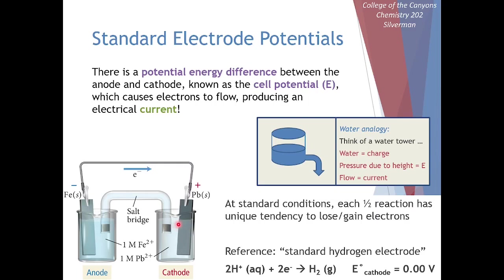As it turns out, each half reaction has its own unique electrical potential energy. For our reaction at the anode, we can call this our potential for — in this case — iron turning into iron 2+. That's the half reaction occurring at the anode. At the cathode, we can have a potential energy for lead 2+ ions reducing into lead.